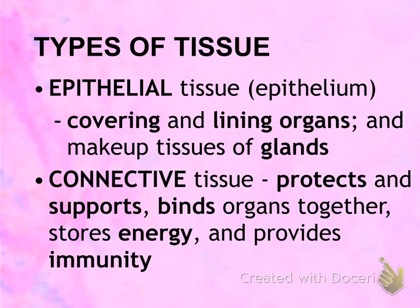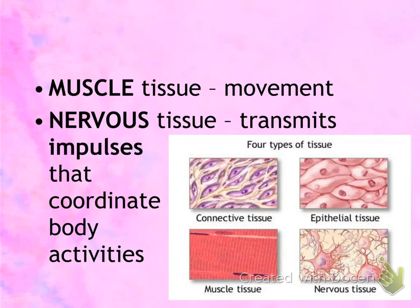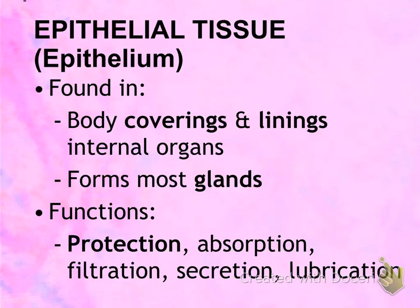There are four types of tissue. The first is epithelial tissue, also called epithelium, found covering and lining organs and is the major type of tissue found in glands. The second is connective tissue, which varies in appearance and function — protecting and supporting organs, binding organs together, storing energy, and providing immunity. The third is muscle tissue, responsible for movement. The fourth is nervous tissue, which transmits impulses that coordinate body activities.